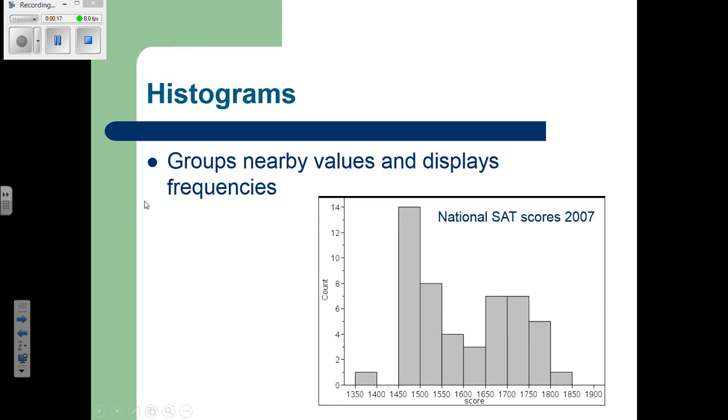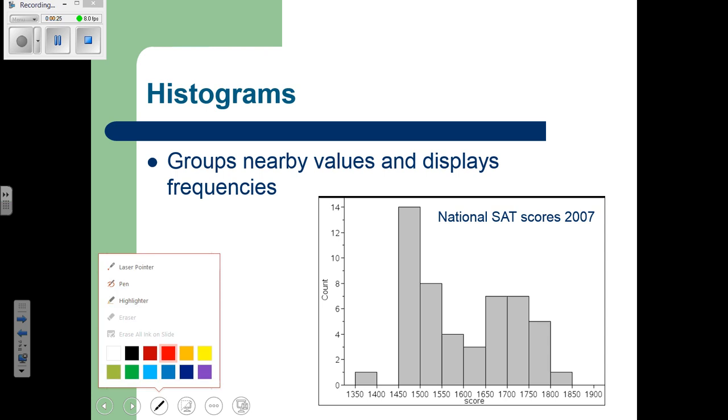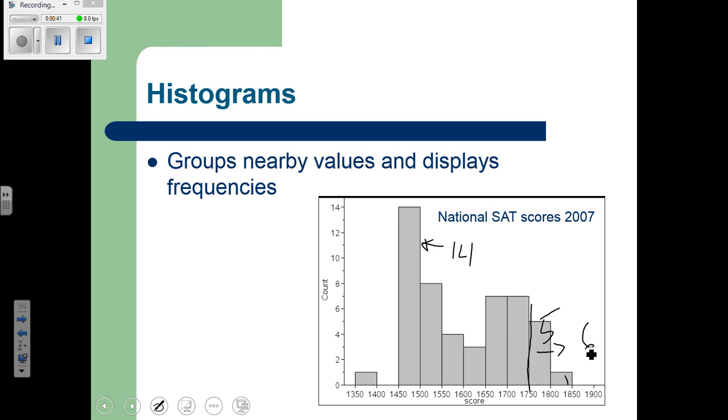For example, here's some data on SAT scores. We can start to see how many students scored between 1450 and 1500 on the SATs, which would be represented by that particular bar, so that's 14 students. We can see how many students scored above 1750, so we take these two bars together, so we have five in this bar and one here, so there's six that scored above a 1750.